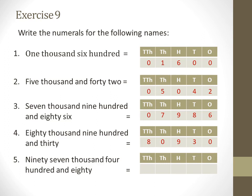This is the last example: ninety-seven thousand four hundred and eighty. How many thousands do we have? Ninety-seven thousand — so under the thousands period I will write 9 and 7 for ninety-seven. Then how many hundreds? Four hundred — so under the hundreds section I will write 4. Then lastly eighty — under the tens and ones I will write 8 and 0. So the number is ninety-seven thousand four hundred and eighty — 97,480.